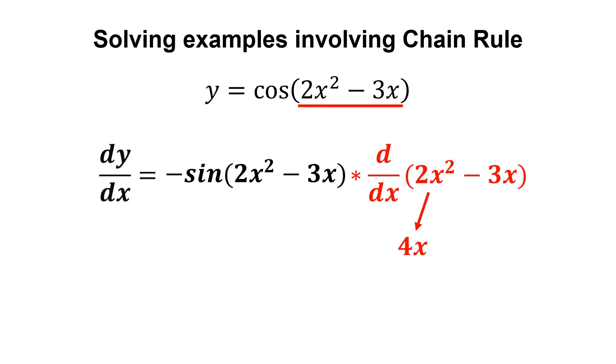Differentiate 2x squared we get 4x, and differentiate negative 3x we get negative 3. And we got our final answer.